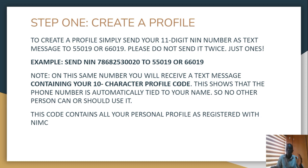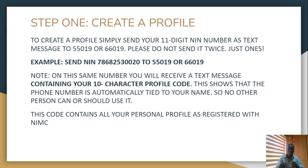Step one: you have to create a profile. To create a profile, you use your NIN — the 11-digit number. All you need to do is send a text in this format: type 'NIN', leave a space, then type the 11-digit number, and send it to the shortcode 55019 or 66019. Please don't send it twice — that is how you create errors. Send it just once. The message you receive might take time, but it will eventually come. On that same new mobile number you used, you will receive a 10-character profile code. That shows that JAMB has automatically tied your NIN to that number, and no one else can use that phone number any longer.